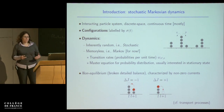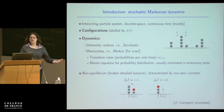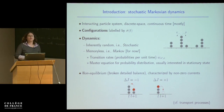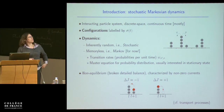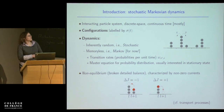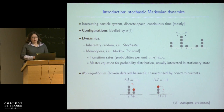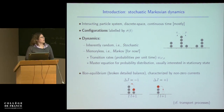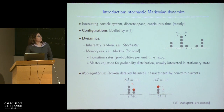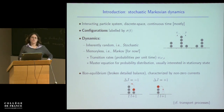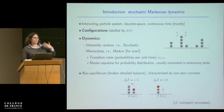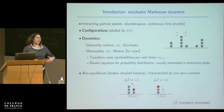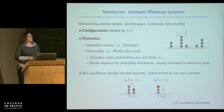Within that framework, to specify the dynamics I need to give the set of transition rates — probabilities per unit time to go from every configuration sigma to every other configuration sigma prime. With those transition rates I can build a master equation for the probability distribution, and typically I'm interested in the long-time stationary state, the time-independent solution. In particular we're going to look at systems where the rates don't obey the so-called detailed balance condition, so we're in what's called non-equilibrium, where stationary states are generally characterised by non-zero current.